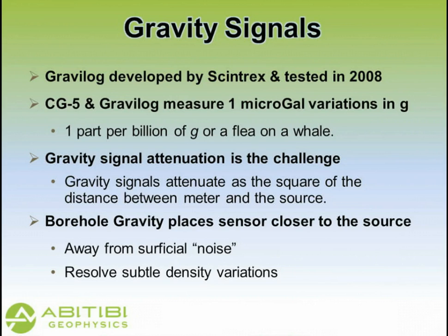The gravity system in the borehole uses the same technology as the CG5 surface meters. We have 1 microGal resolution and probably a 5 to 10 microGal noise envelope in the borehole. The biggest limitation of gravity — surface or borehole — is signal attenuation. By getting the gravity sensor down a hole, we can get it closer to the target, so we're away from some of the surface noise and able to get cleaner readings about the target.